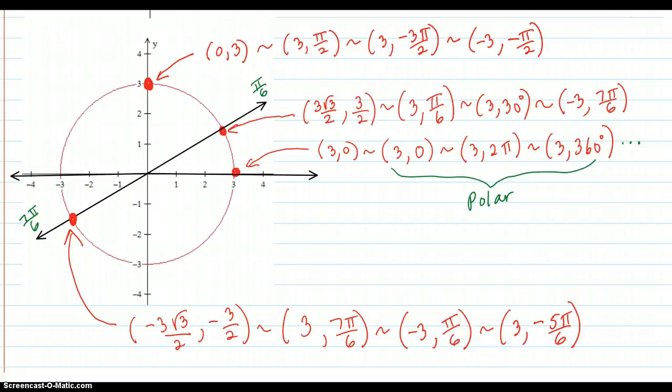First this point here. This point here is in rectangular coordinates 3, 0. In polar, it's a 0 radian angle or a 0 degree angle and the target is 3 units out on that ray. 3, 0.